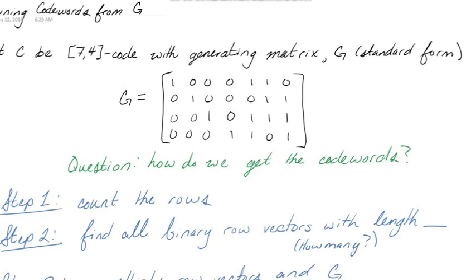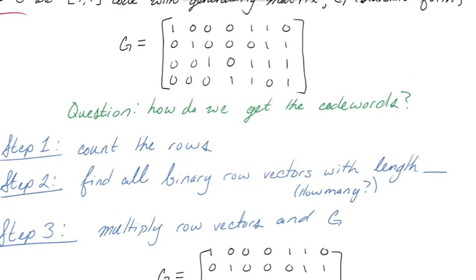In this video I'm going to continue to talk about linear codes, specifically if you have a generating matrix G, how you would obtain the code words from it. So here I have an example. Let C be a 7-4 code with a generating matrix G, which I have put in standard form and written here for you. Question is how do we get the code words? What are the code words?